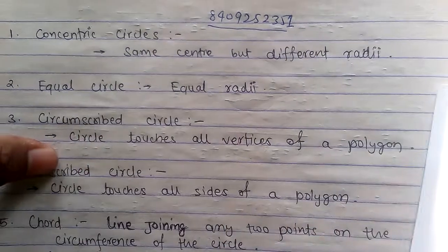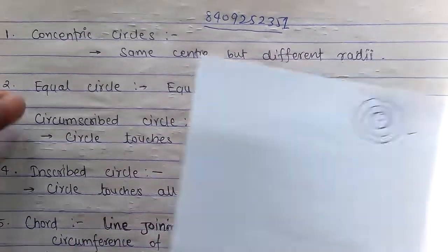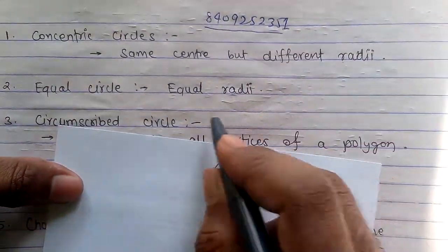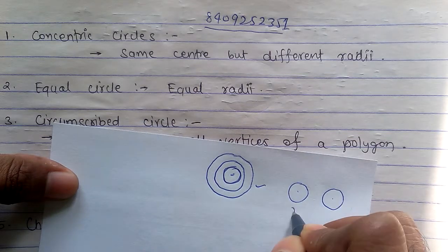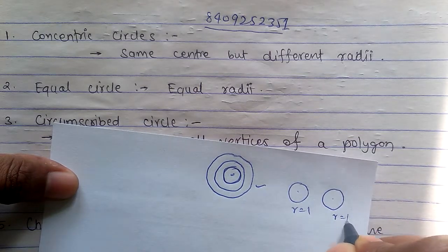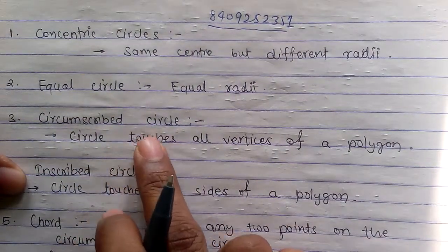Similarly, the second one: Equal circles. What is that? Equal radii. If you have equal radius, this is also equal. Both are equal circles.